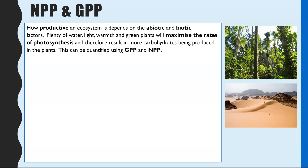NPP and GPP are two new terms compared to GCSE, and they link to how you can quantify how productive an ecosystem is. The productivity of an ecosystem depends on how favourable the abiotic and biotic factors are.